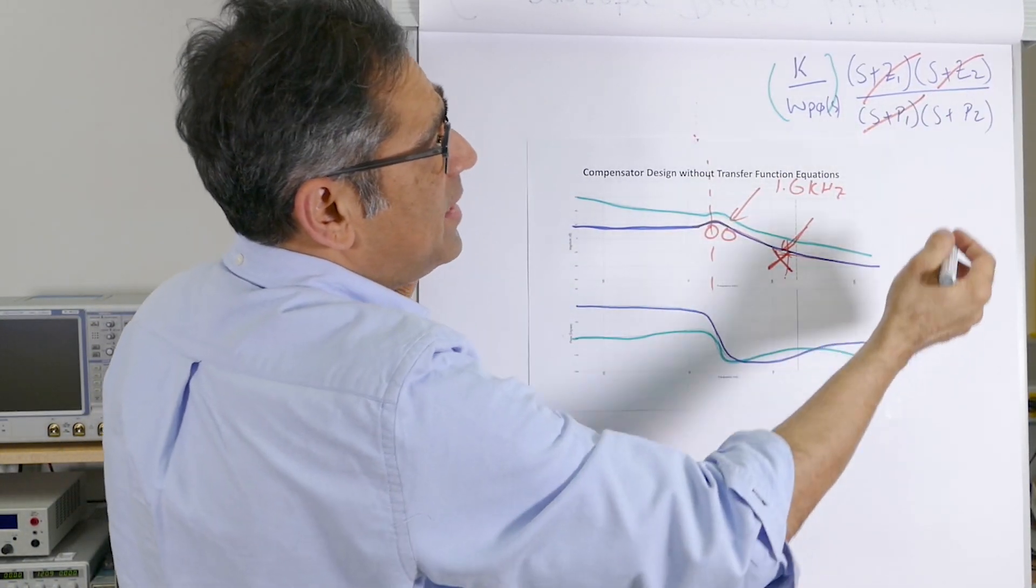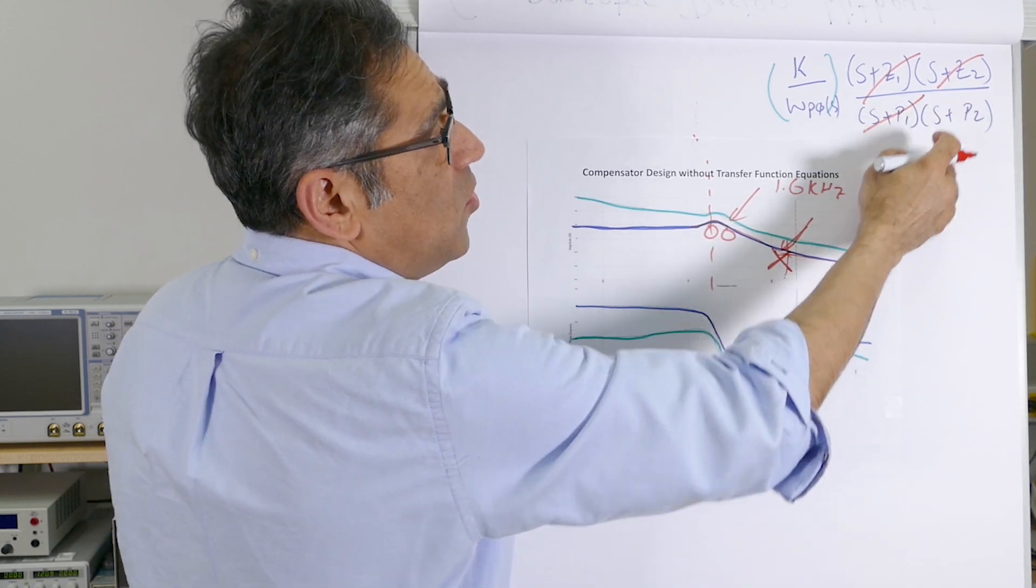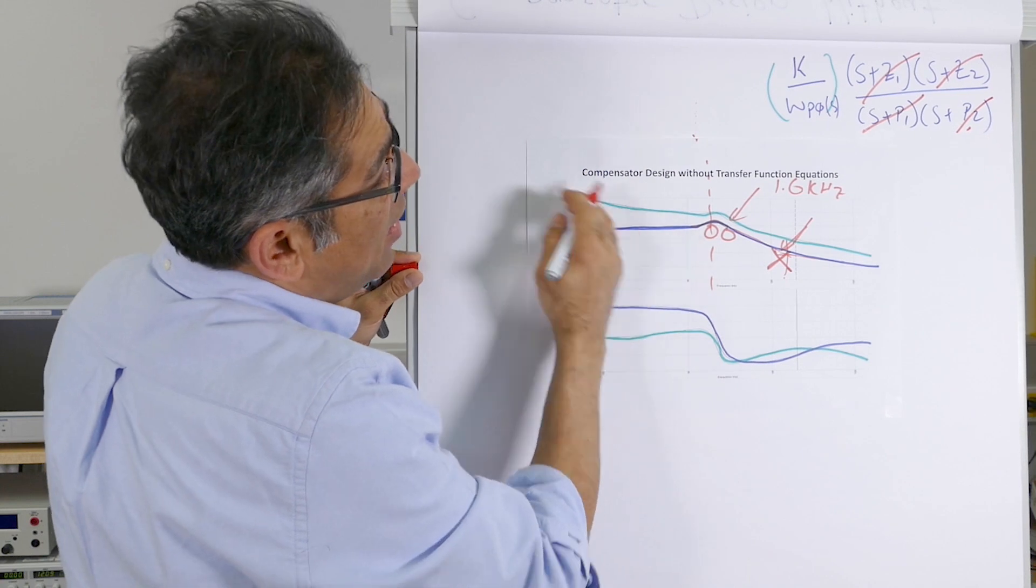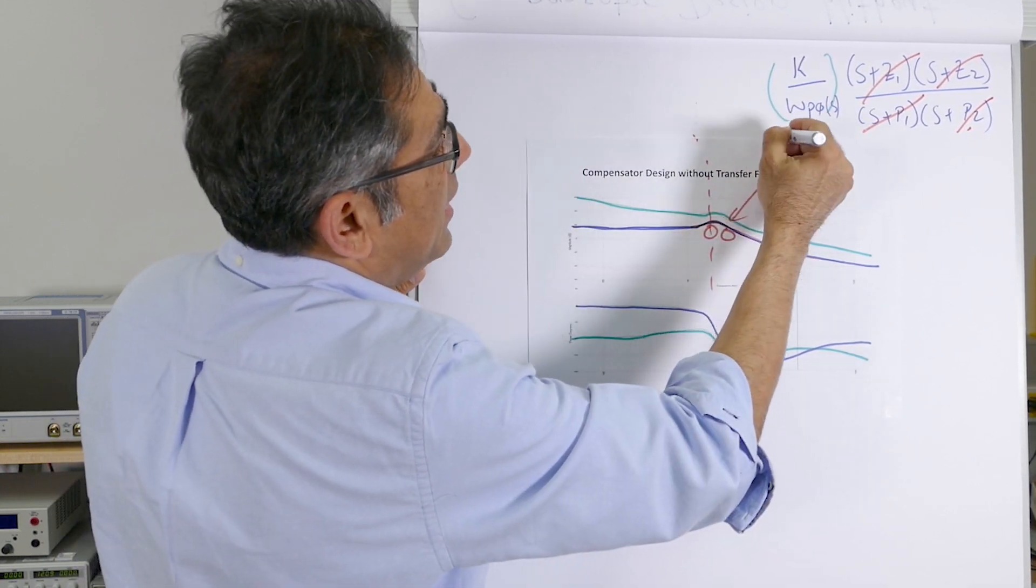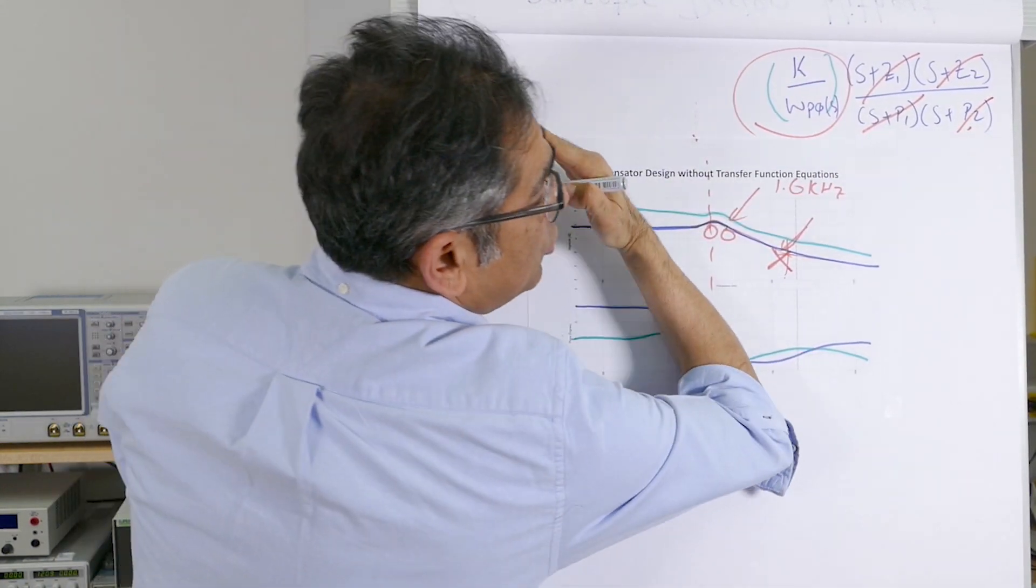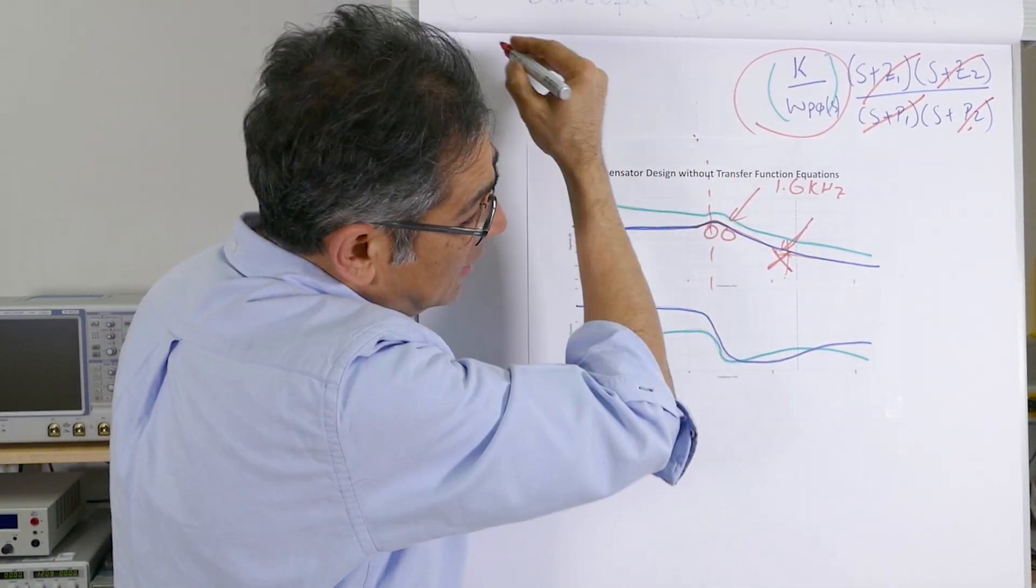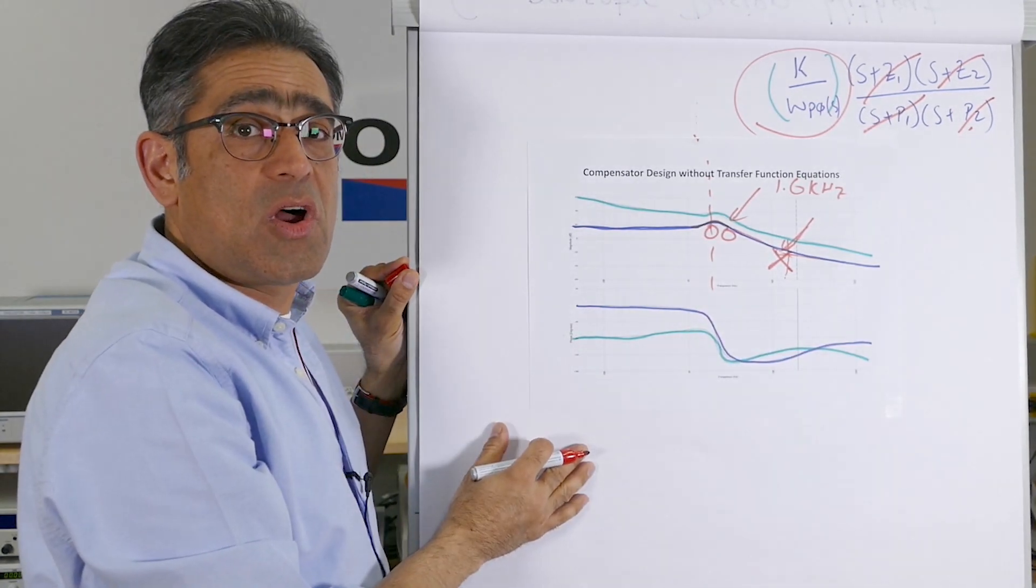The second pole I can place at half the switching frequency to reduce high frequency noise. Then I'm left with more or less a straight line. The pole at origin will shift this thing up and down, so the final thing I have to do is place this pole at origin so it crosses over where I want it to cross.